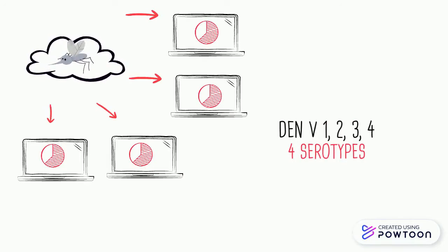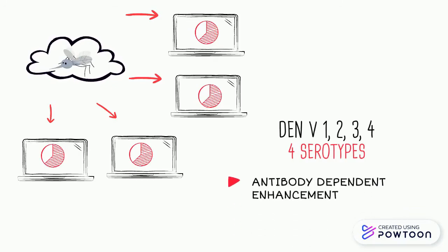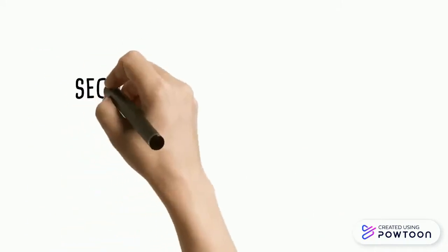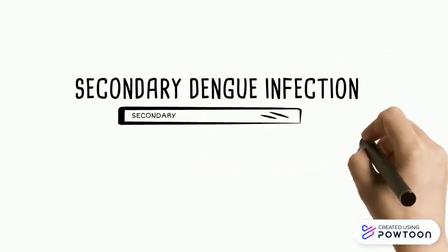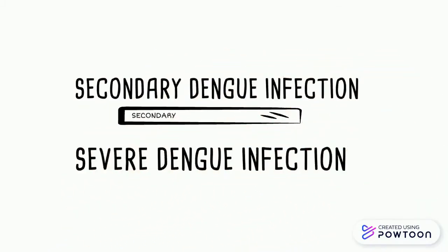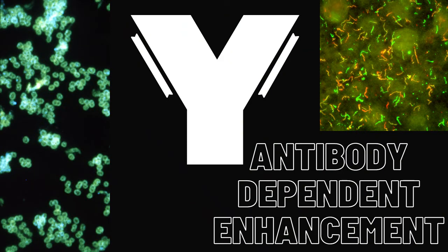So if you have DENV-1 infection before, you are immune to DENV-1 for life. But you still can get infection from other serotypes. And the worst part is, if you get a second infection from other serotypes, it will increase the risk of a severe Dengue infection. This is called antibody-dependent enhancement. In simple terms, if your patient is having a secondary Dengue infection, be careful, because it is more likely to be a severe one.